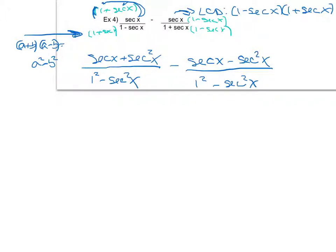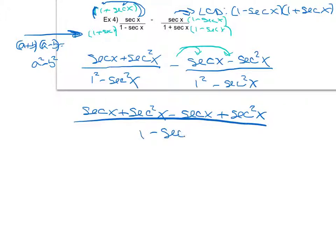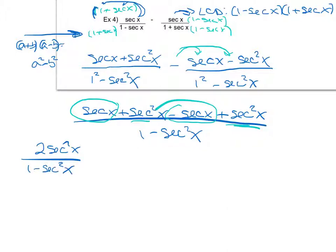Now that I have a common denominator, I can put these together. I need to be careful that I'm subtracting, so this minus sign distributes to both terms. That gives me secant x plus secant squared x minus secant x plus secant squared x, all over one minus secant squared x. Upon further examination, the secant x terms drop out, and I now have two secant squared x terms. Combining like terms gives me two secant squared x over one minus secant squared x.